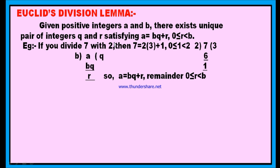You can write A as B into Q plus R using the division rule, where R is greater than or equal to 0, but less than B. If you go for any division, either the remainder is 0 or the remainder may be a positive value and it should be less than the divisor. Therefore, R should be greater than or equal to 0, but less than B. This is Euclid's division lemma.